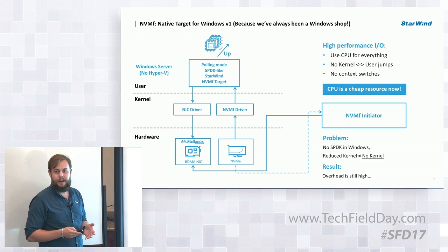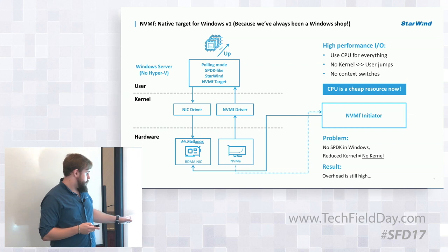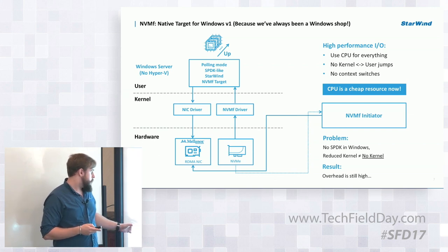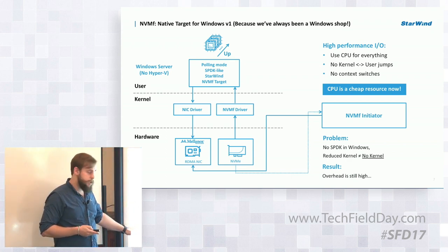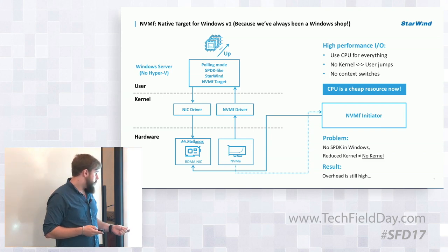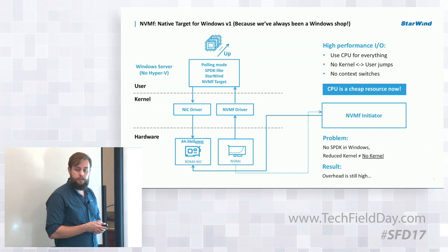We reduced the amount of commands processed in kernel but didn't get rid of kernel processing completely, which resulted in slightly higher overhead than we wanted. The architecture is pretty simple: a physical server running Starwind NVMe over Fabrics target on Windows, using Mellanox networking and Intel Optane NVMe drives. The target runs on the SPDK-like functionality we had to develop to bring this to Windows.